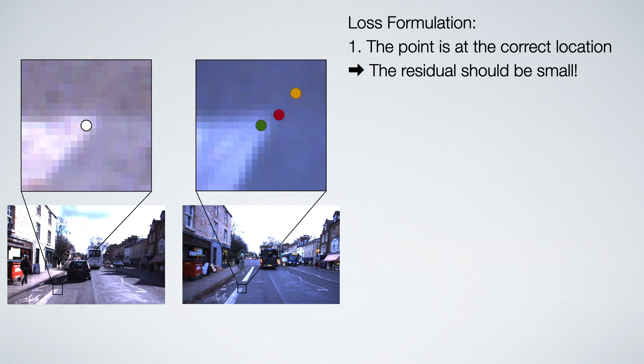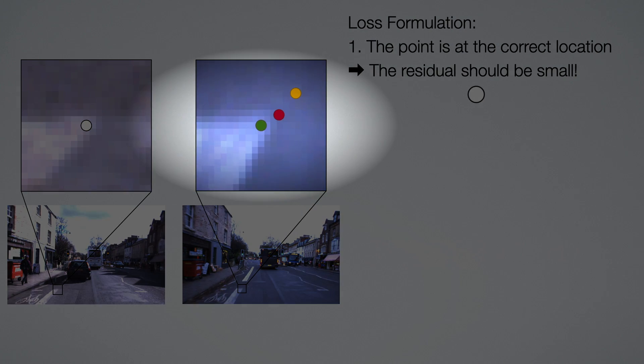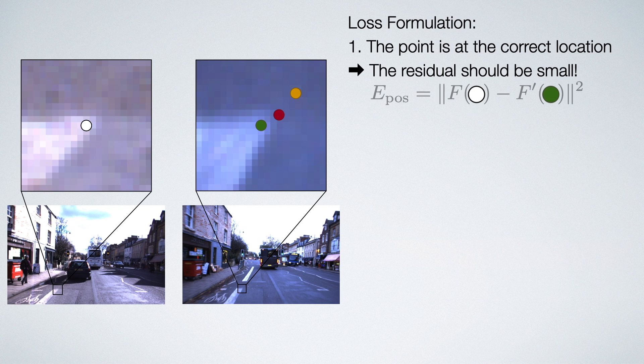In that case, the algorithm should know that the solution is good, so the residual should be small. So we take the ground truth correspondence and say that the features at their location should be as similar as possible.